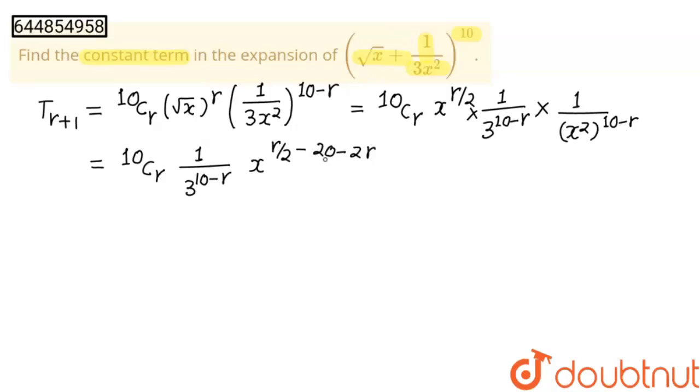So this is r plus 1 term. If you want to make any term constant, the degree of x should be 0. So we will find r upon 2, I will multiply minus inside, so this will become minus 20 plus 2r is equal to 0.